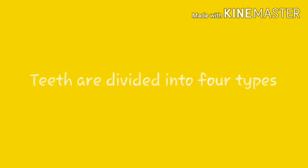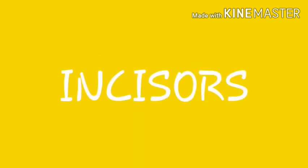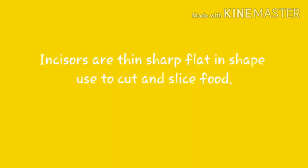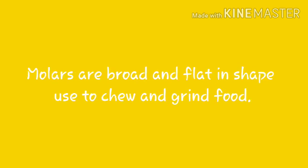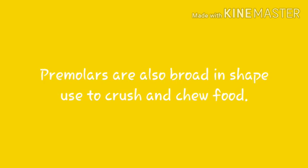With respect to structure and functions, teeth are divided into four types: incisors, canines, molars, and premolars. Incisors are thin, sharp, and flat in shape, used to cut and slice food. Canines are sharp and pointed in shape, used to hold and tear food. Molars are broad and flat in shape, used to chew and grind food. Premolars are also broad in shape, used to crush and chew food.